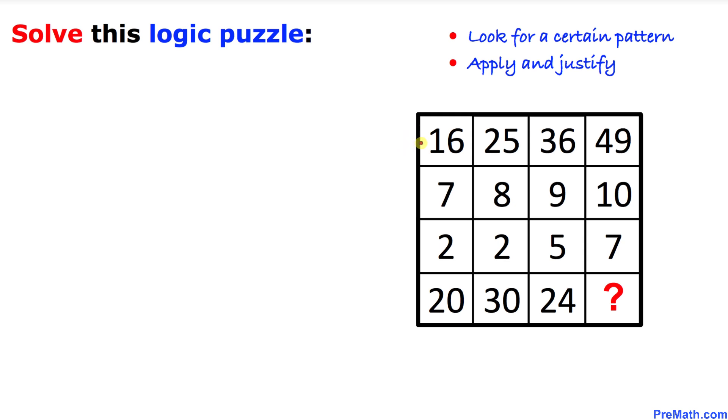And here's our very first step. Let me call this first row as r1, the second row as r2, third row as r3, and this is going to be our row 4.